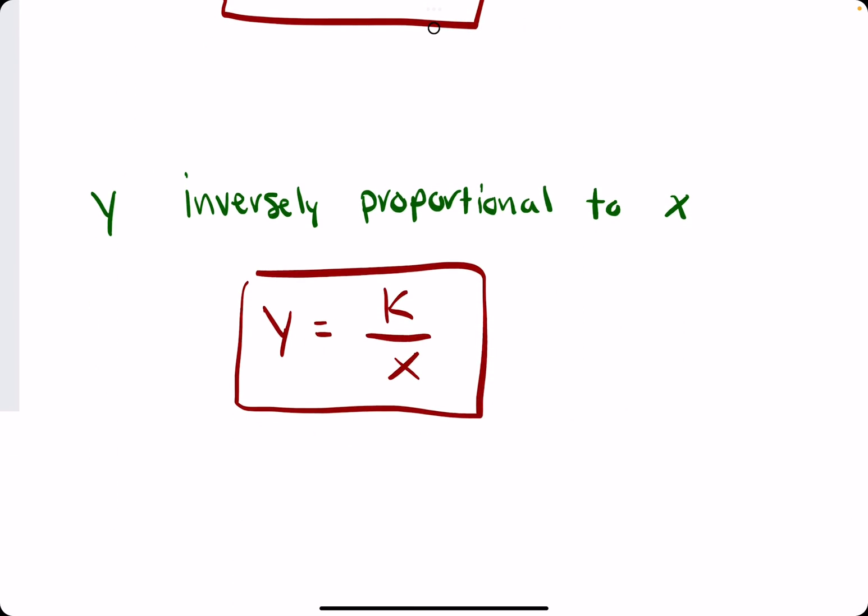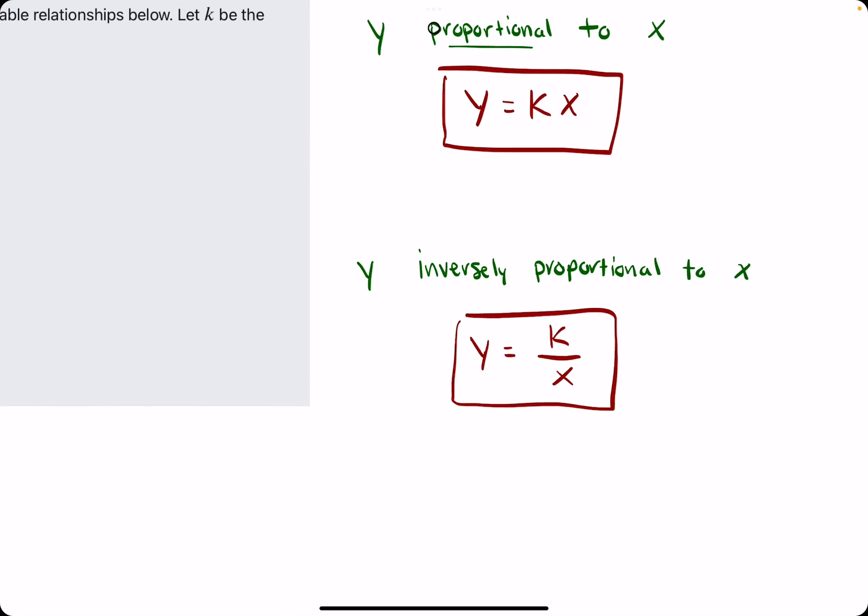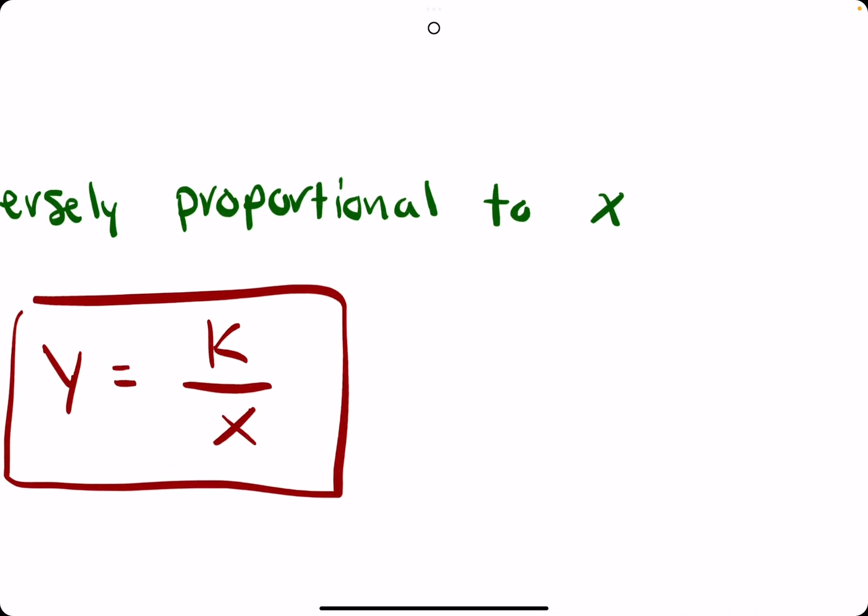If y is inversely proportional to x, that means we can represent y as the quotient of some constant k over x. So inversely means you're throwing x on the bottom.